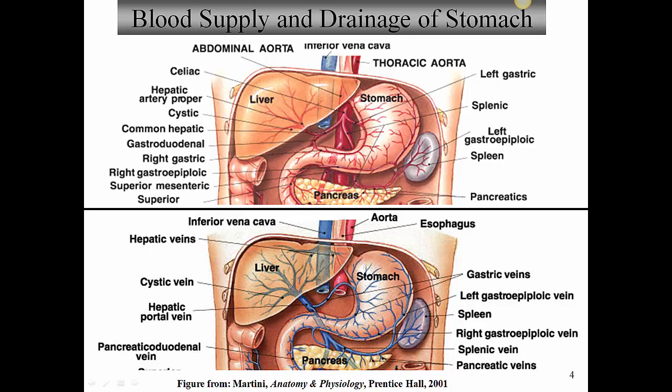As far as venous drainage, one of the things we talked about previously in the circulatory system was the hepatic portal vein. Keep in mind, as we go through the digestive system, that basically all venous roads lead to the hepatic portal vein. We have veins draining the stomach, spleen, pancreas, and intestines — all of these eventually go into the hepatic portal vein, then into the liver, and eventually form hepatic veins that enter the inferior vena cava and bring blood back to the heart.